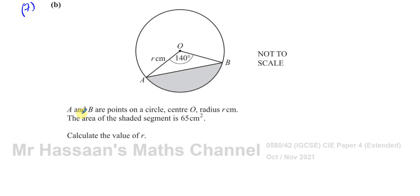Here we have a question about this circle where A and B are points on the circumference of the circle, the center is O, the radius is r, and the area of the shaded segment is 65 centimeters squared. We want to find the value of r. To find the area of this segment which we know the area of, we would have had to find the area of the whole sector and subtract from it the area of this triangle.